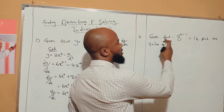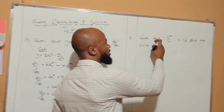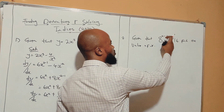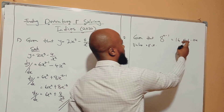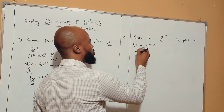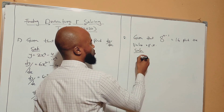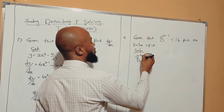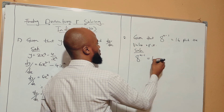Given that 8 — this is indices now. Given that 8 to the power of x minus 1 is equal to 16, find the value of x. Solution. These are easy things. You have 8 to the power of x minus 1 is equal to 16.